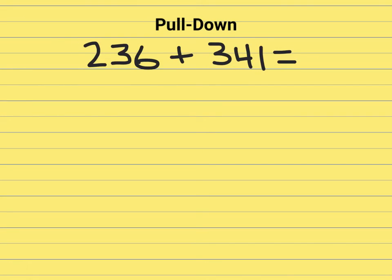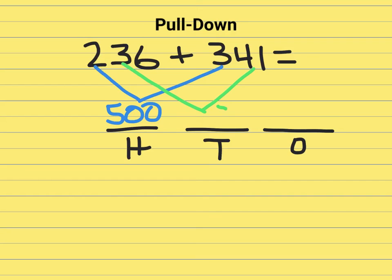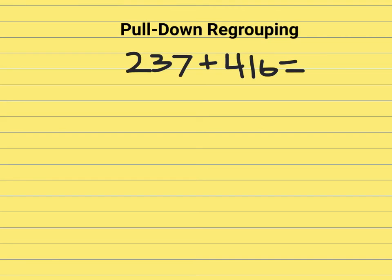This strategy will be called the pull down method. What we're going to do is have three places for our numbers. So our final answer is 577.